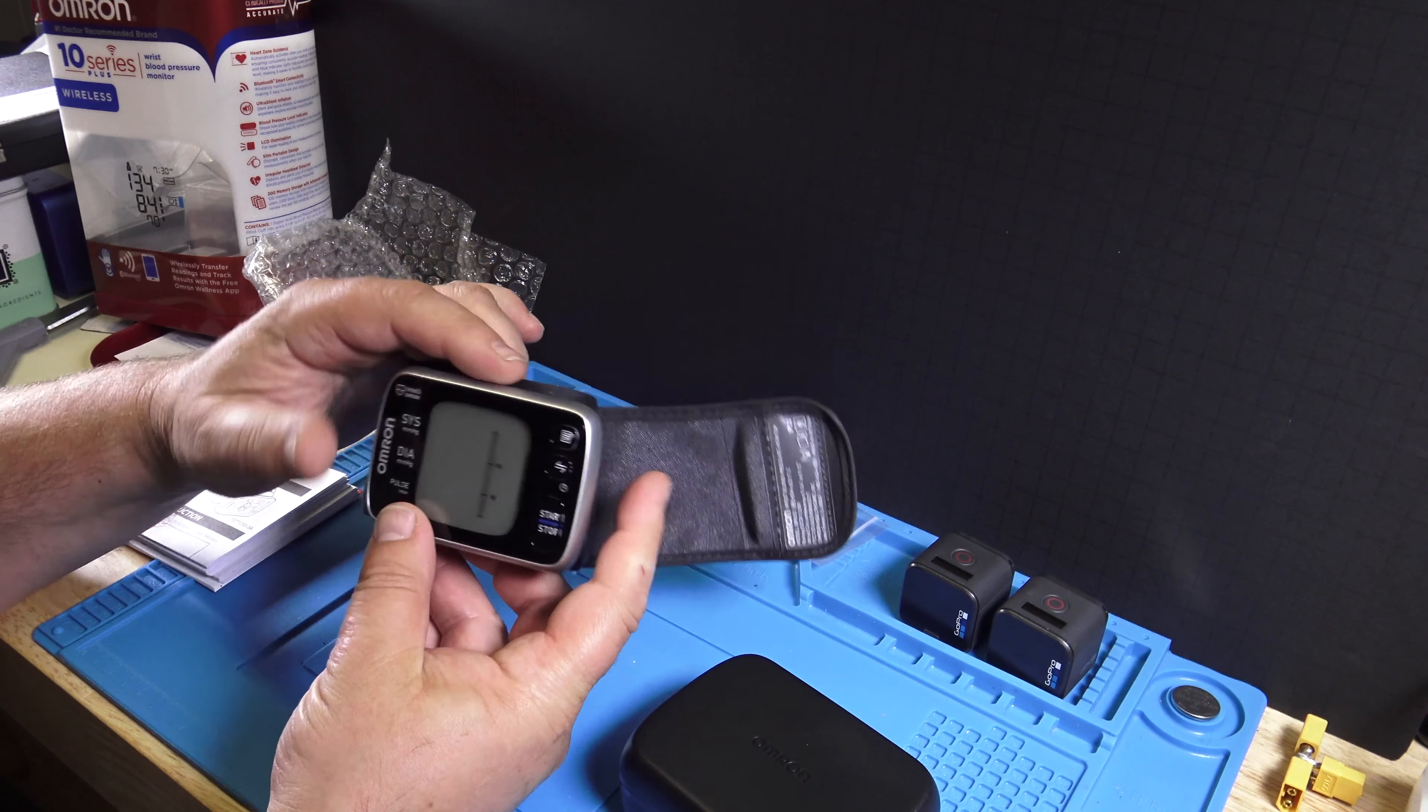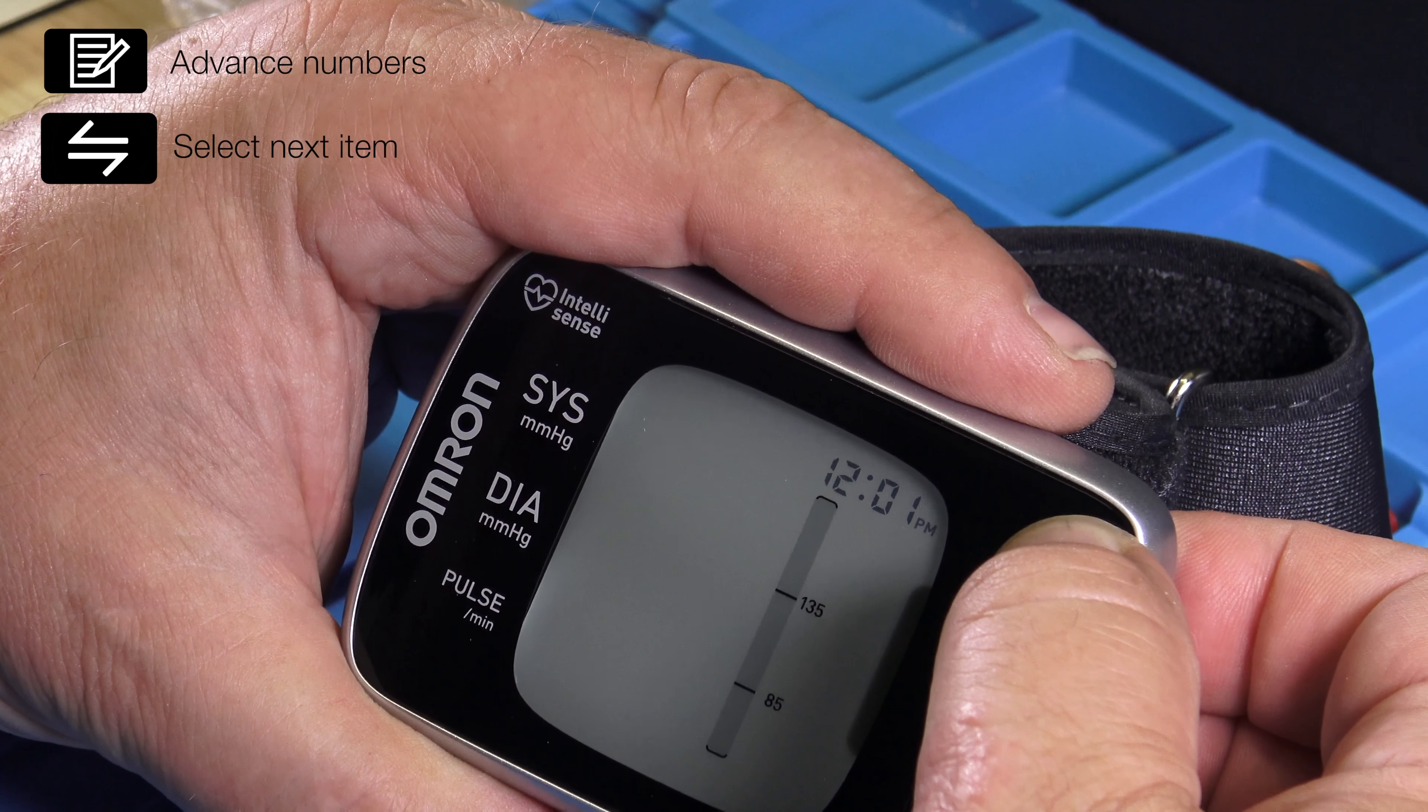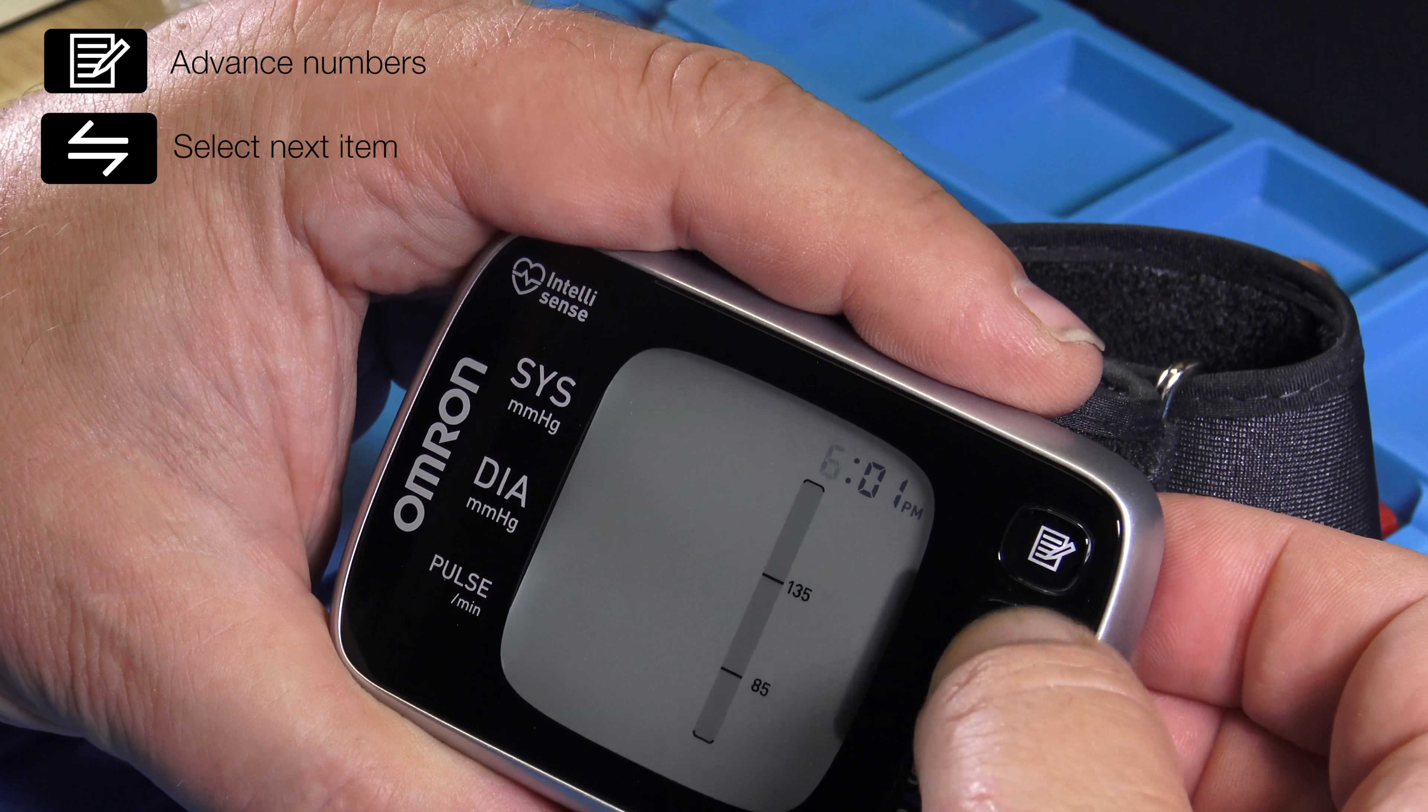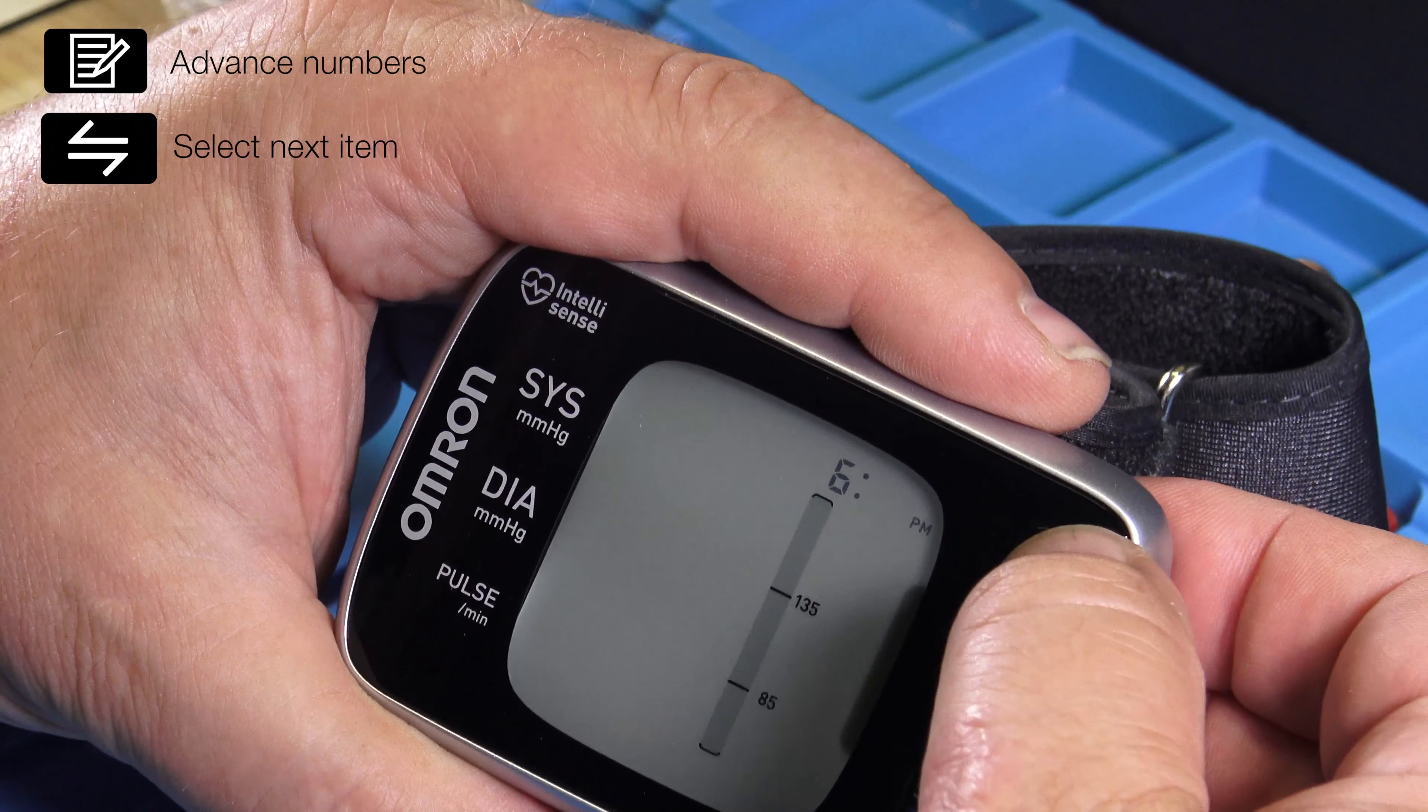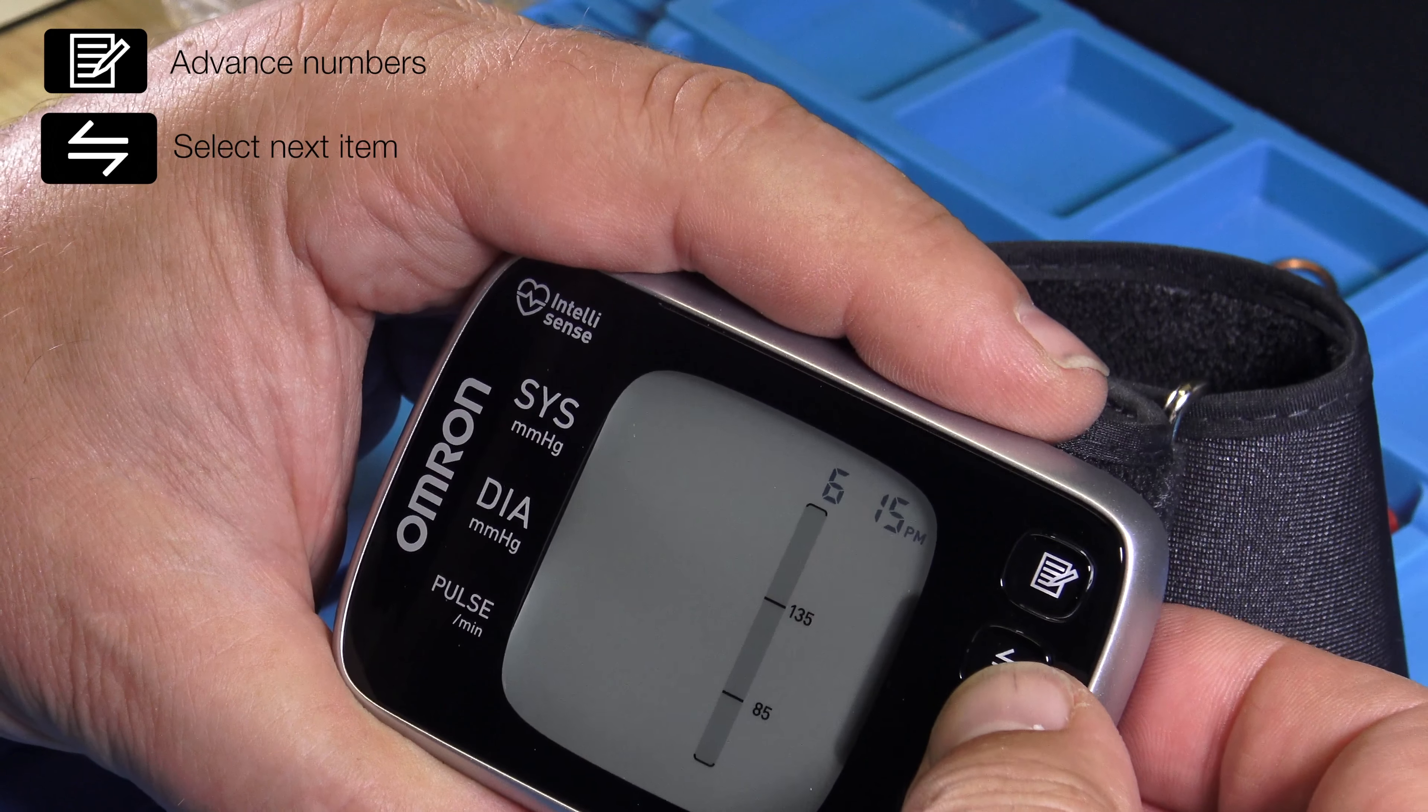And then we need the time. So, it is 6 o'clock p.m. So, with the advance numbers button, now we move forward to p.m. 6. Then the next item. So, we go all the way through. When we are done setting the time, we will push the stop button.